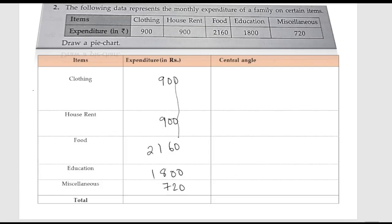Now let us add up all the expenditures to find the total. Adding 900 plus 900 plus 2160 plus 1800 plus 720, the total expenditure comes to 6480.